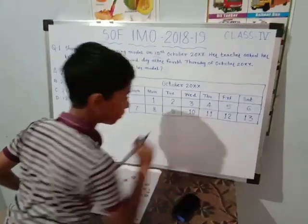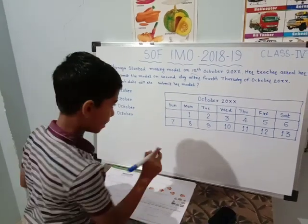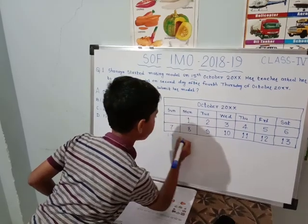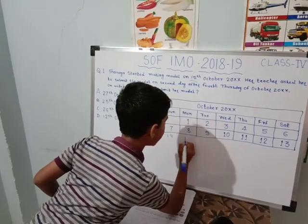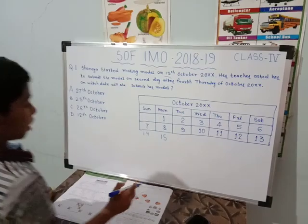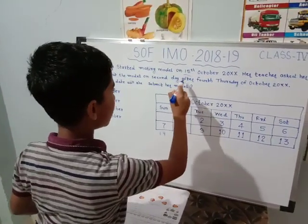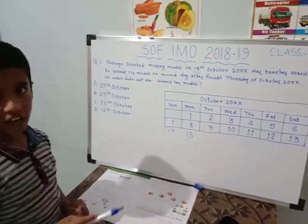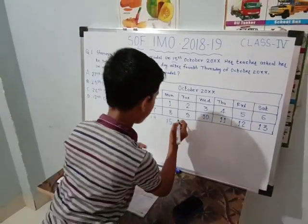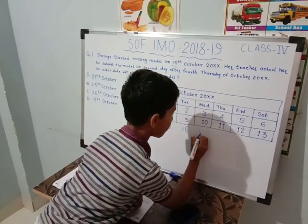She started her model on 15th October. We have to see where 15 is on the calendar. 15 is not there, so we have to make it. 15 is here. Then we have to see when it will finish — they told after the 4th Thursday. The 4th Thursday is not showing yet, so we have to fill in more dates: 16, 17.